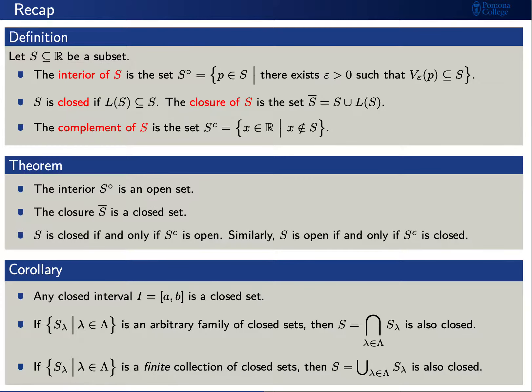We found that any closed interval from a to b is a closed set. If S sub lambda, where lambda ranges over some indexing set capital Lambda, is an arbitrary family of closed sets, then its intersection is also a closed set. Similarly, if S sub lambda, where lambda ranges over a finite indexing set capital Lambda, is a collection of closed sets, then the union is also a closed set.